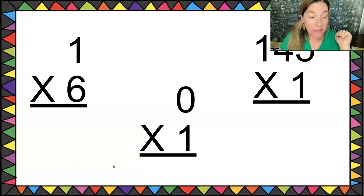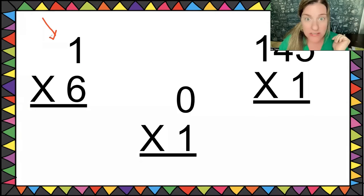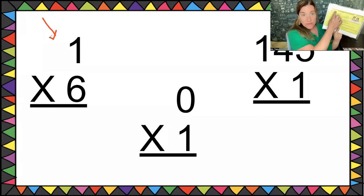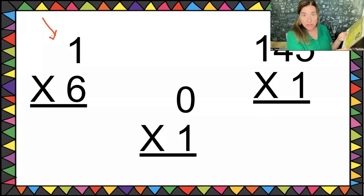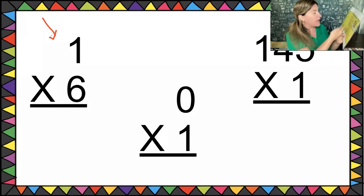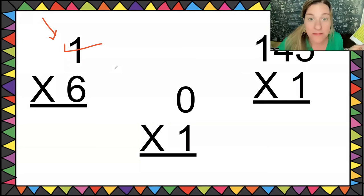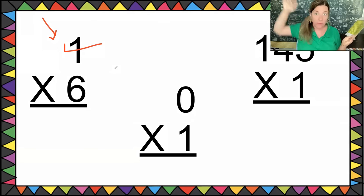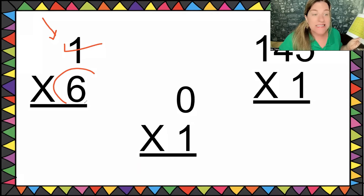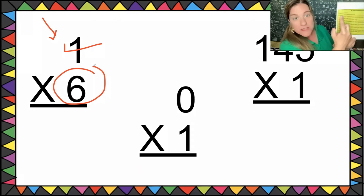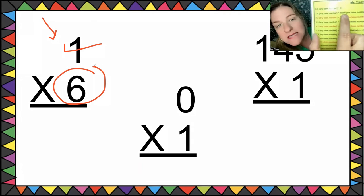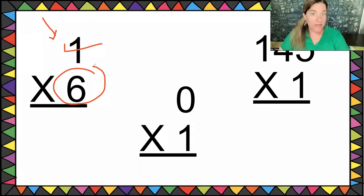One times six — I ask myself, what rule am I going to use? I'll use the ones rule because it's easier than the sixes rule, which I'm not learning until later. Six is my base number. My magical paper tells me one times any base number equals the base number itself. So this answer is simply six.